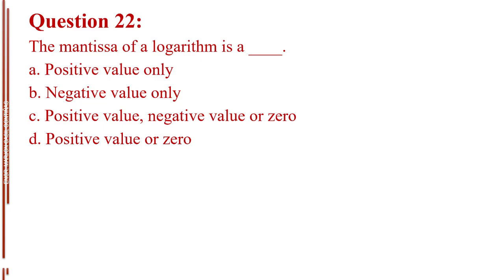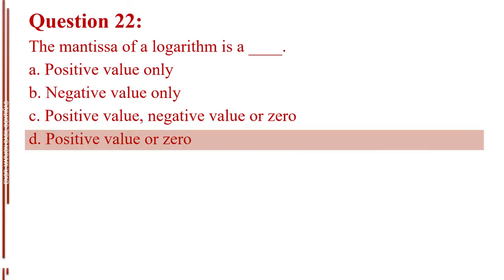Question number twenty-two. The mantissa of a logarithm is blank. Letter A, positive value only. Letter B, negative value only. Letter C, positive value, negative value, or zero. Letter D, positive value or zero. The answer is Letter D, positive value or zero.